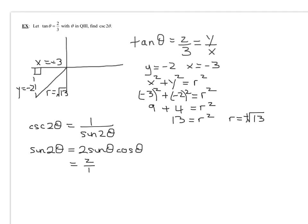So it's two over one times, well, what's the sine of theta? The sine of theta is y over r. Well, so in this case, y is negative two and r is the square root of 13. So the sine of theta was negative two over the square root of 13.